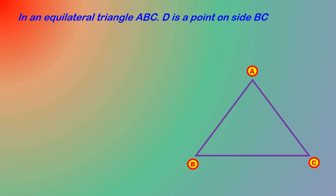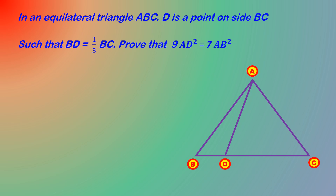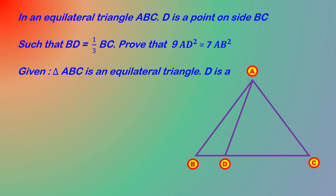In an equilateral triangle ABC, D is a point on side BC such that BD is equal to 1/3 BC. Prove that 9 AD square is equal to 7 AB square. Given: triangle ABC is an equilateral triangle, D is a point on BC such that BD is equal to 1/3 BC.